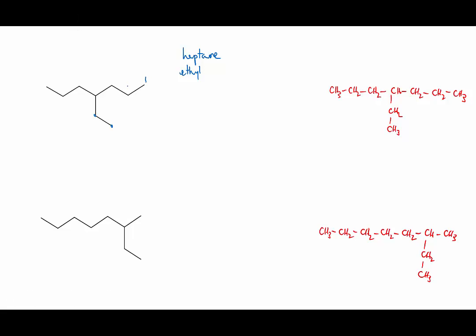Now if we number the main chain the branch is attached right in the middle, so it doesn't actually matter which direction we number in. And it turns out that the branch is on the fourth carbon. So the final name for this molecule is 4-ethylheptane. Remember the hyphen to separate numbers and letters.